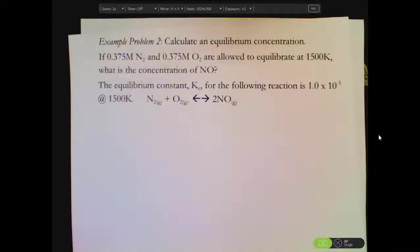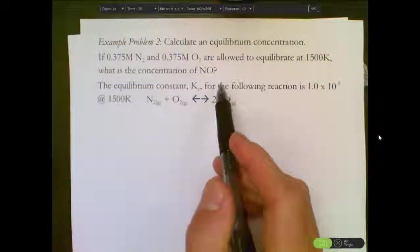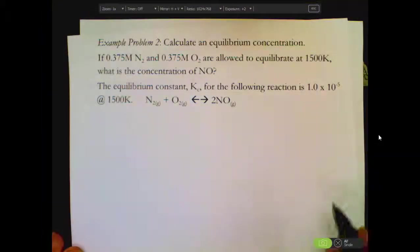This is another example of how to use an ICE table to complete an equilibrium problem. We're using ICE tables because we don't always know the equilibrium values of an equilibrium setup, and therefore we need to use the ICE table to figure out those values. In this case, there's nothing that says it's at equilibrium. It's saying it's allowed to equilibrate, which is going to tell us we probably need to use an ICE table.